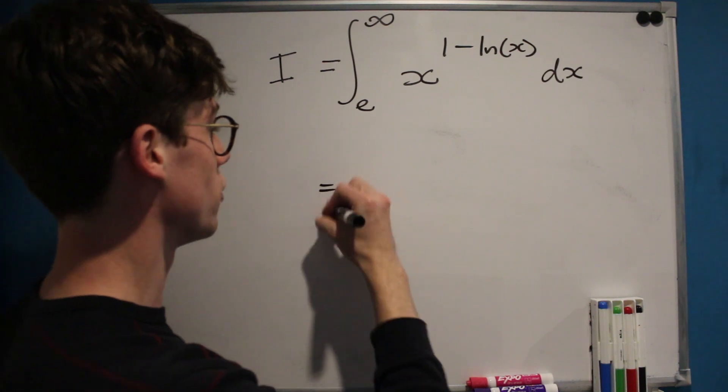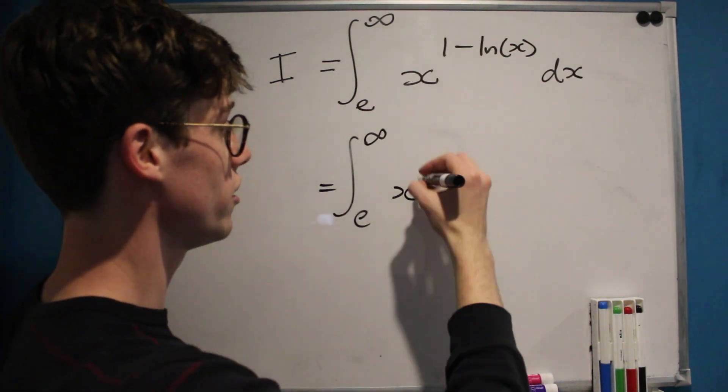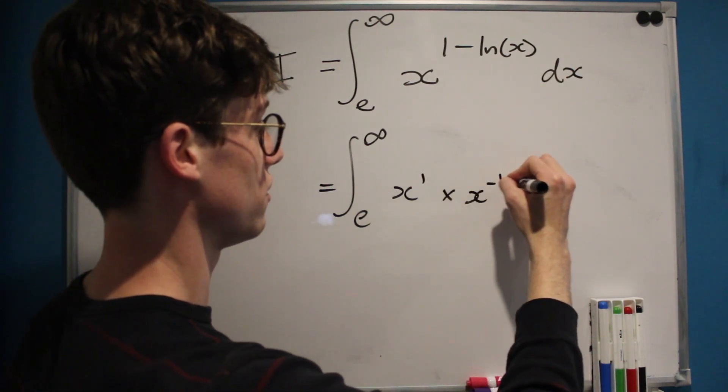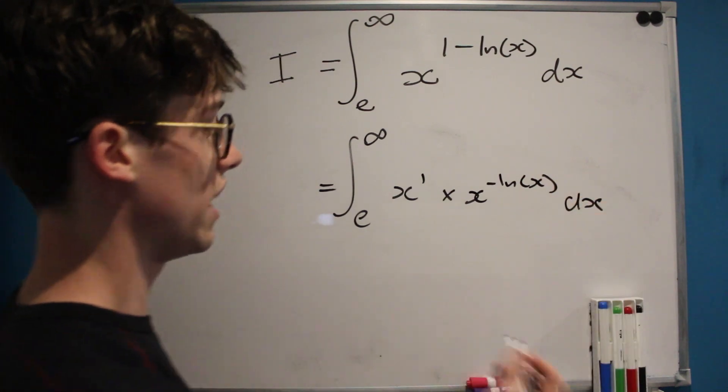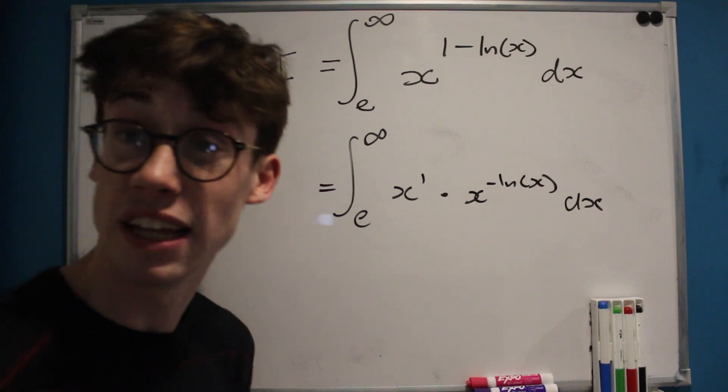Now our first step is going to be a very simple one, it's just going to be splitting up x to the 1 minus ln x into x to the 1 times by x to the negative natural log of x, and we're mostly just doing this in order to make the next step slightly clearer.